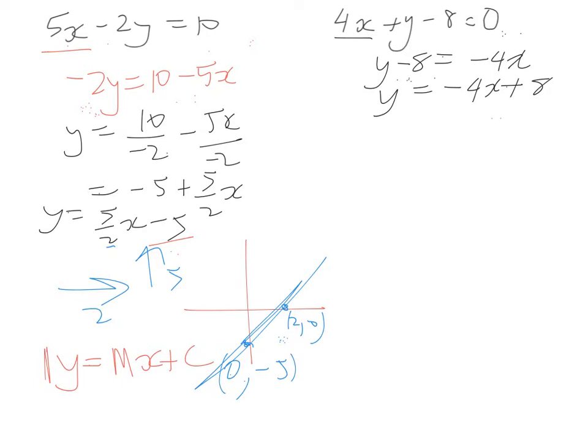Okay. This one over here, we've got a y-intercept of 8 and a gradient of negative 4. So what we're going to do, we're going to put this in there. We've got a y-intercept of 8. So 0 and 8.